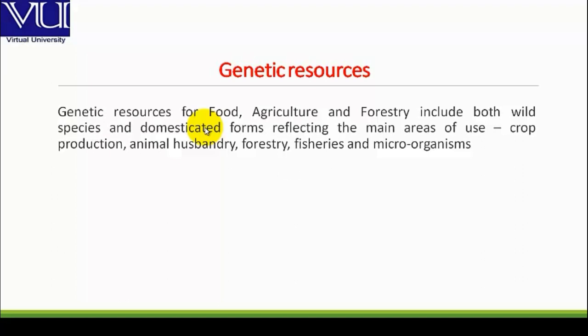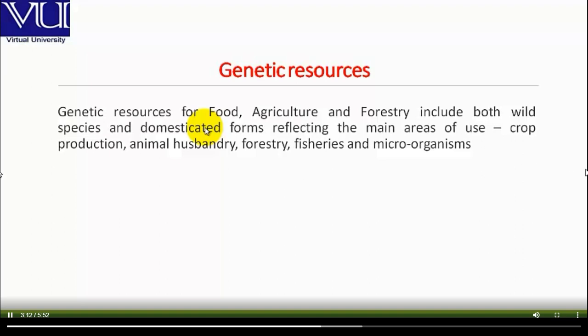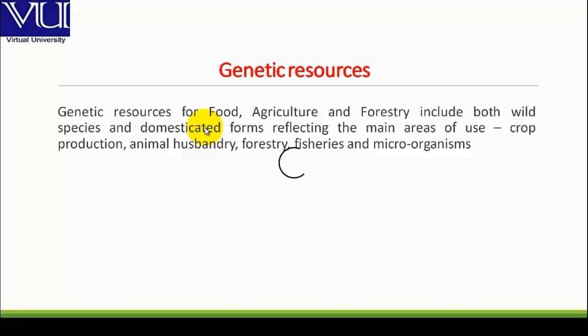The Domesticated Form includes all those animals that have been tamed and kept by humans as a working animal, food source, or pet — specifically as members of those species that have, through selective breeding, become notably different from their wild ancestors. Different types of fruit trees and citrus are included in domesticated plants.